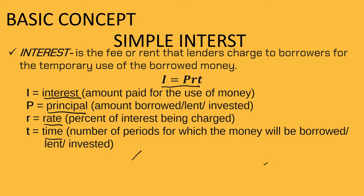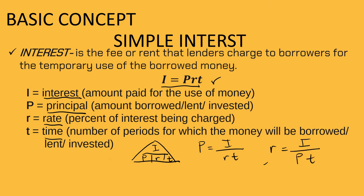We can use the triangle formula, which is I is equal to P times R times T. If I is unknown, we use P times R times T. If the principal amount is missing, then we use I over R times T. If R is missing, we use I over P times T. And if the time is missing, we have T is equal to I over P times R.